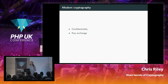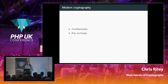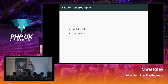Another area modern cryptography covers is key exchange. If you want to talk to someone else, you need to agree on a secret key. One way is asymmetric cryptography, where you have a different key for encrypting than for decrypting. You can publish the encryption key publicly — anyone can use it to encrypt a message for you — but only you hold the private decryption key, so you can receive confidential messages without pre-sharing a symmetric key.